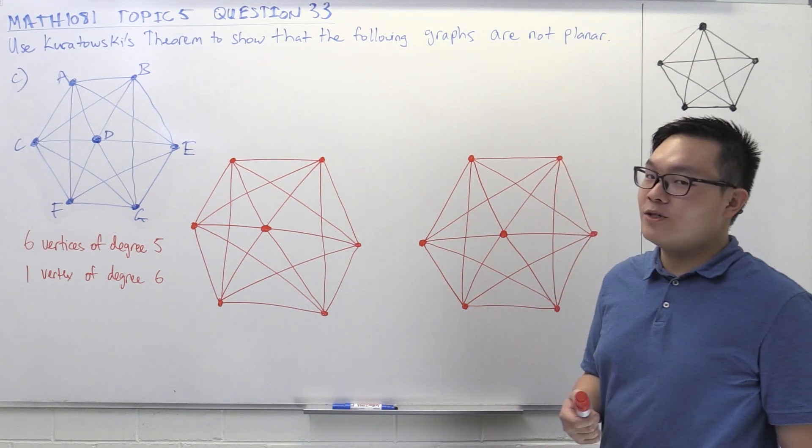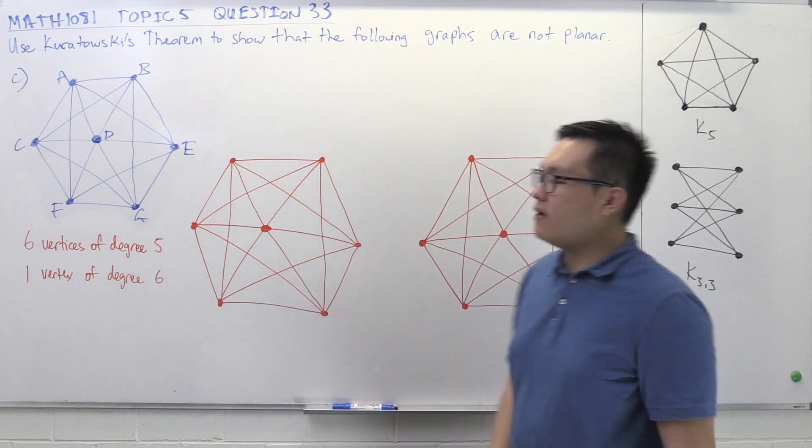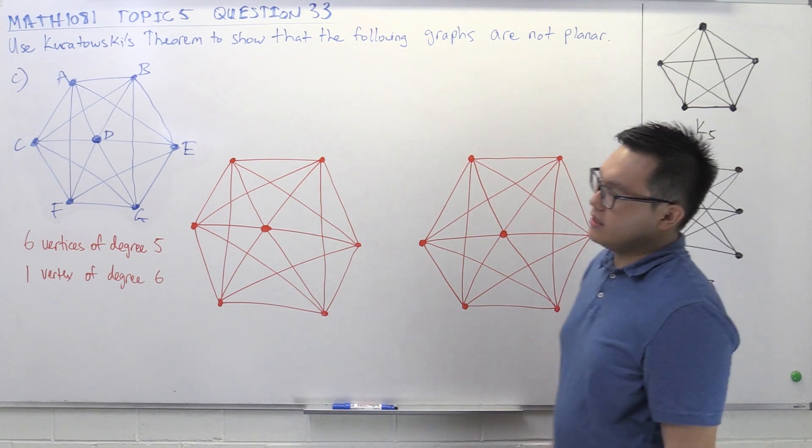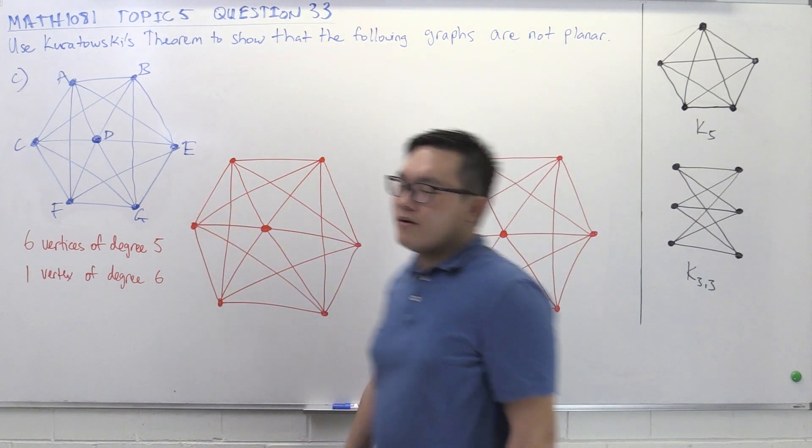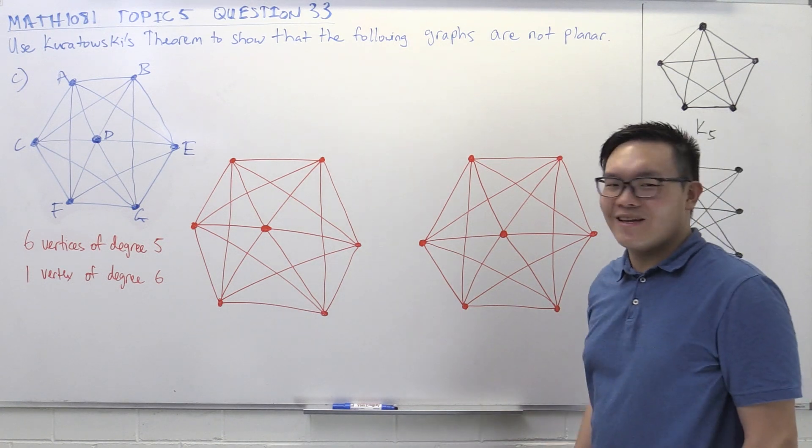The way we do that is we examine the properties of this graph. So this graph has six vertices of degree 5 and one vertex of degree 6, the one in the middle. Now, this graph looks a little bit familiar because it kind of looks like a K6.